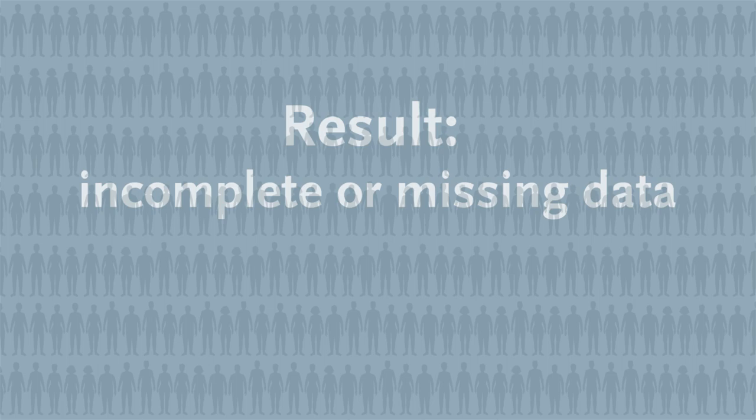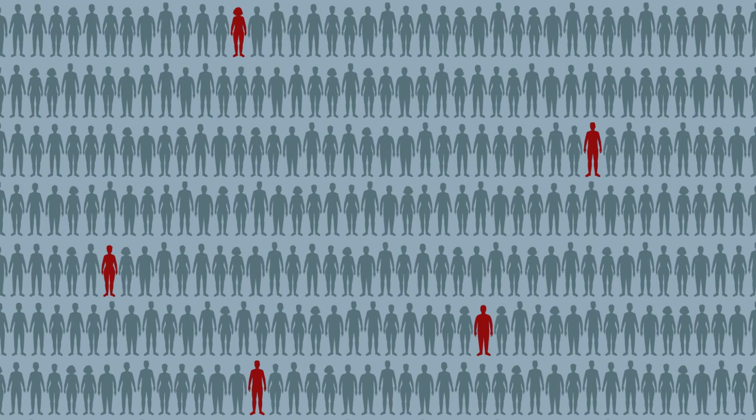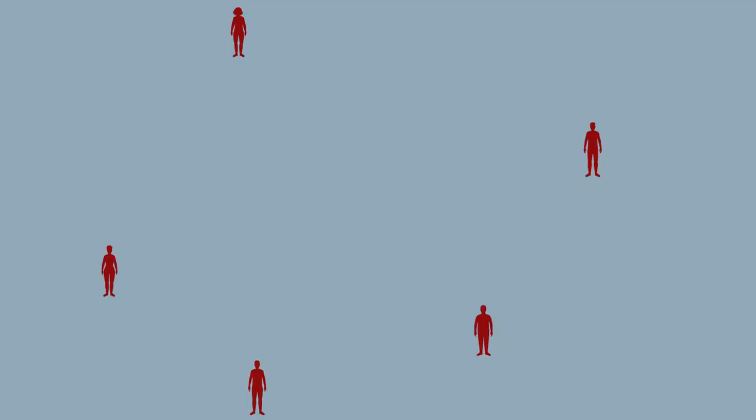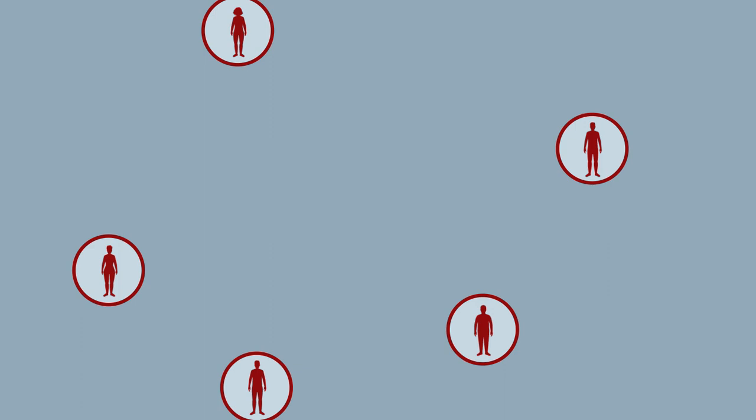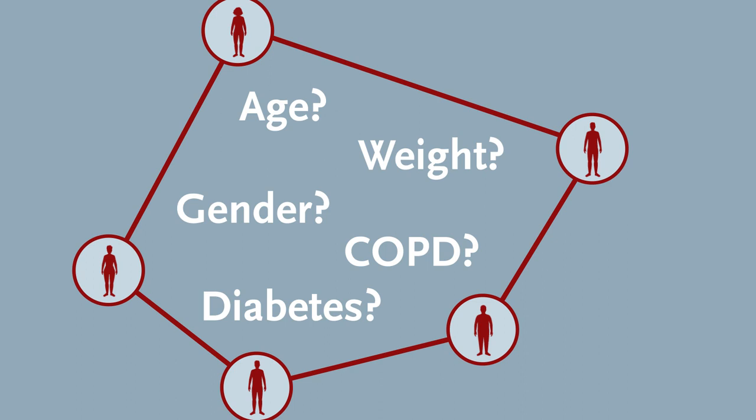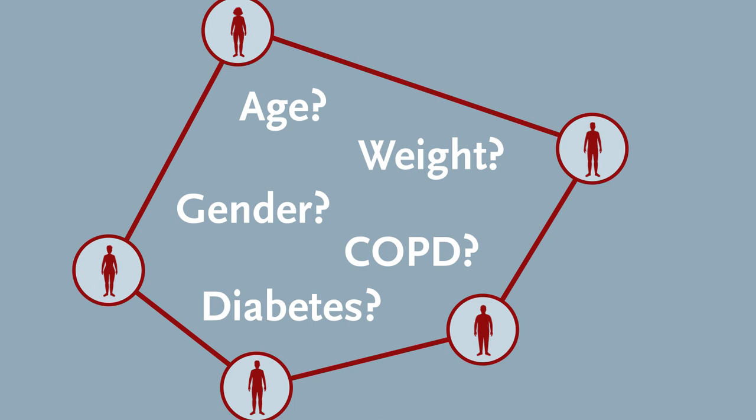You might think that if the amount of data missing is small and the sample size large, it may be possible to simply discard cases with missing data. After all, what are a few data points out of hundreds or thousands? But what if data are missing for a reason? What if the participants who stopped taking the study drug or who don't show up at a study visit share something in common? In that case, ignoring incomplete data is likely to introduce bias into your results.